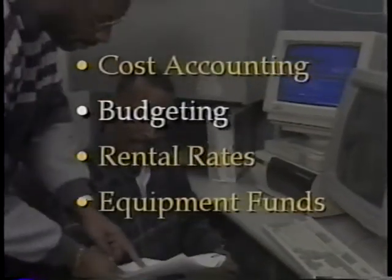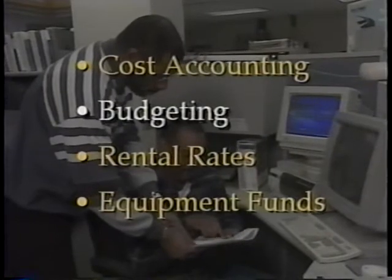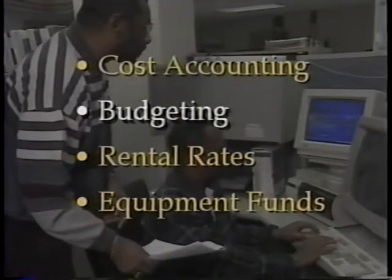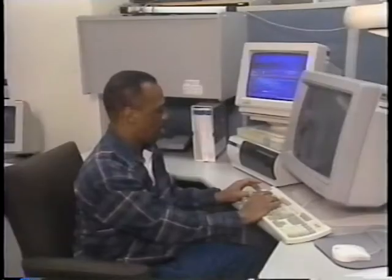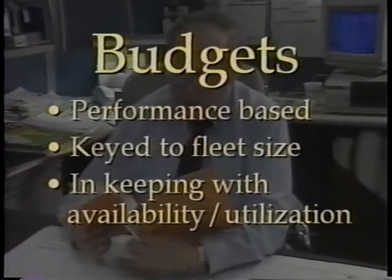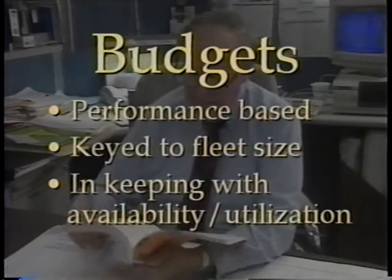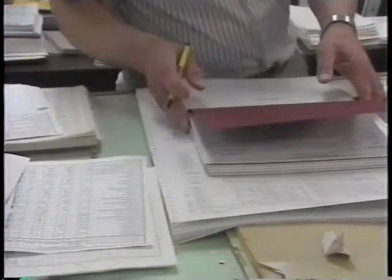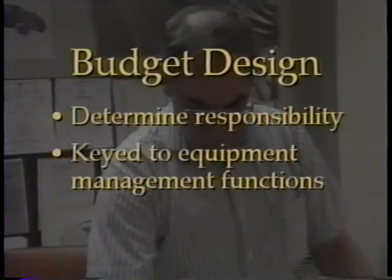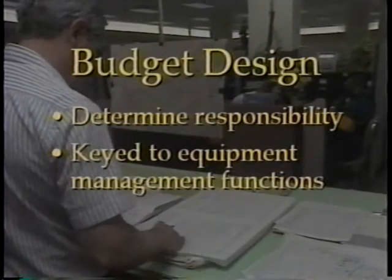As with cost accounting, the agency will probably have some type of formalized budgeting procedures in place. The objective should be to develop budgeting procedures that support and enhance the existing system. Budgeting is much like planning, with considerable overlap between the two. To the extent possible, budgets should be performance based and keyed to the level of fleet size, availability objective, and projected utilization. The first step in designing the budgeting system is to determine responsibility, and these responsibility centers generally should correspond to the major equipment management functions.